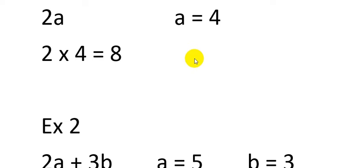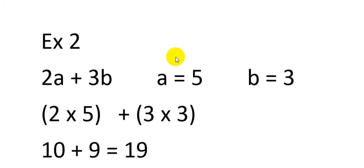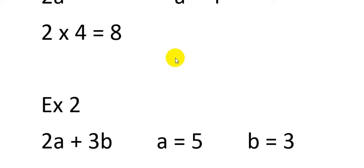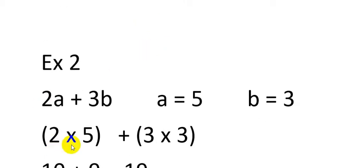Let's go to a few more examples to understand substitution better. The second example is the algebraic expression 2a plus 3b, where the value of a is 5 and the value of b is 3. So 2a refers to 2 multiplied by a. We write 2 multiply by 5, plus 3 multiply by 3.